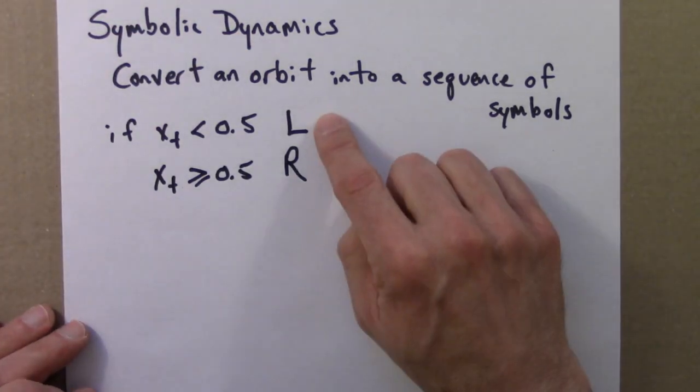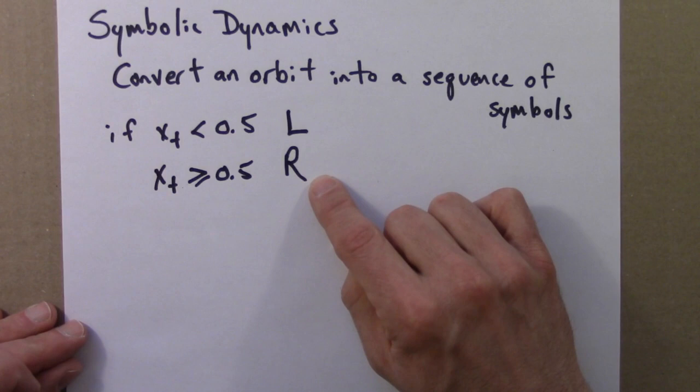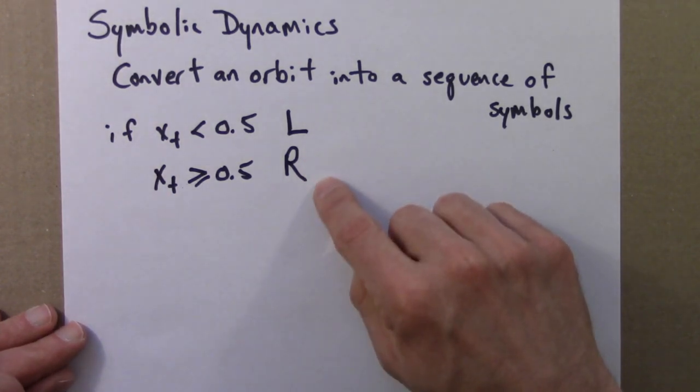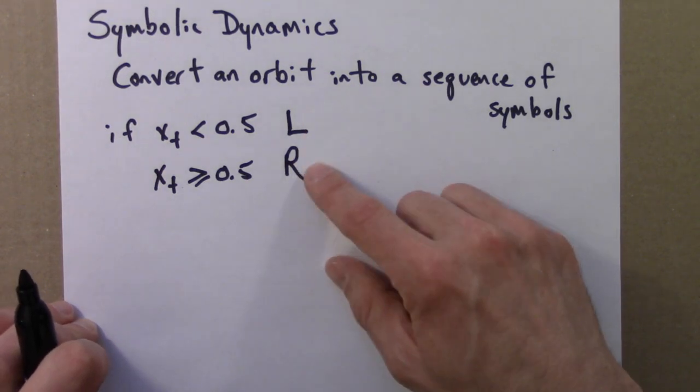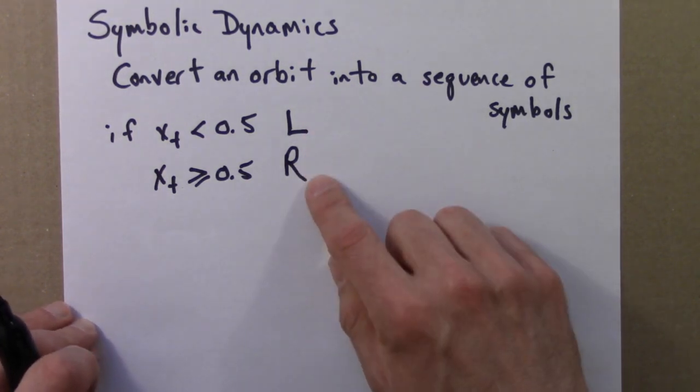I'm picturing this would be in the left half of the unit interval and this is on the right half. The symbols you use are completely arbitrary. You could use hearts and spades or x and y or zeros and ones. But I'll use L and R.